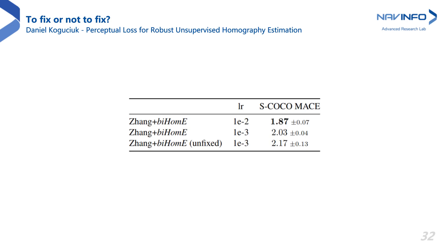We also want to find out how important freezing the loss network is for effective homography estimation learning. As shown in the table, a fixed loss network performs better. One of the possible reasons is that freezing weights of G allows using a bigger learning rate, which can result in better convergence. But even for the same learning rate, freezing the loss network is still a preferable policy.